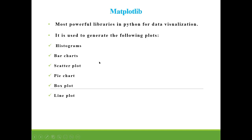Next comes matplotlib. Matplotlib is the most powerful library in Python and is generally used for data visualization. It is used to generate various kinds of plots like histograms, bar charts, scatter plots, pie charts, box plots, and line plots. These plots are used to represent data in the easiest possible manner.